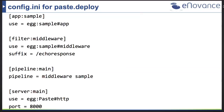An example configuration file defines the application, the middleware, and a pipeline listing every middleware to use followed by the application. We also define the server part, in this case listening on port 8000. In the filter middleware section, you can add configuration options — for example 'suffix equals echo response' — that are used inside the middleware. So you can add any configuration options here and access them in your middleware.